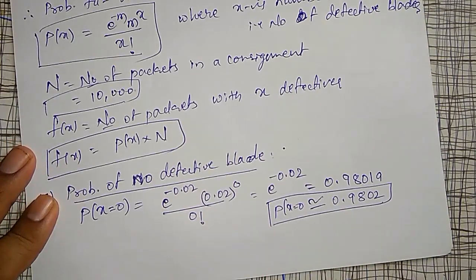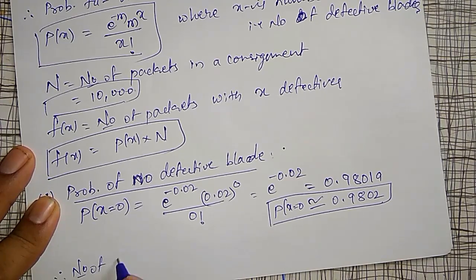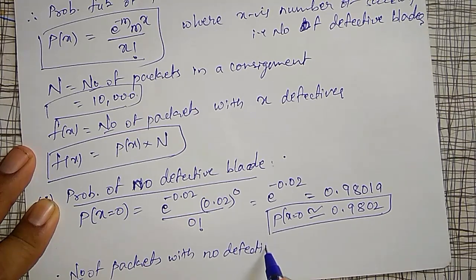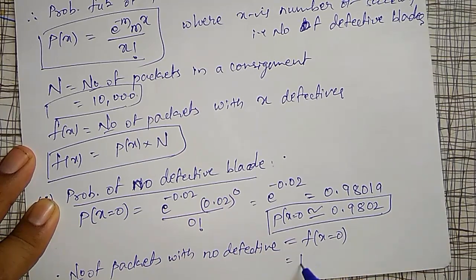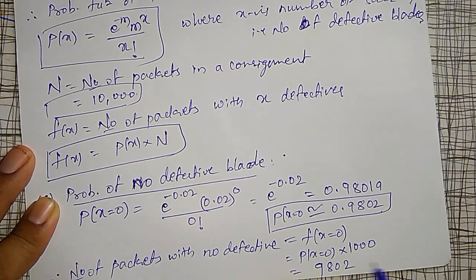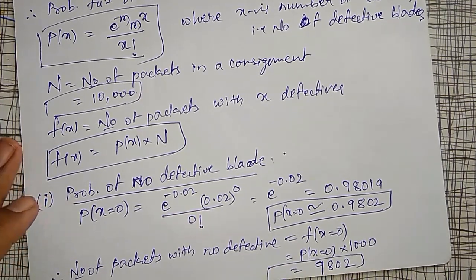The number of packets with no defectives is f(x = 0) = P(x = 0) times 10,000, which equals 0.9802 times 10,000, giving approximately 9,802 packets with no defective blades.